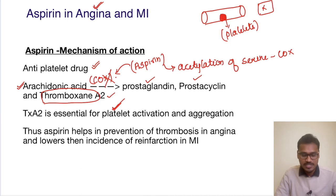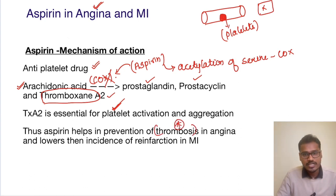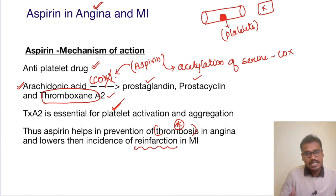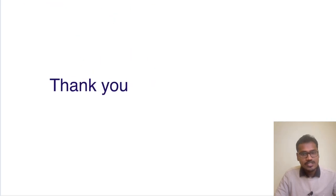This helps in prevention of thrombosis in the case of angina. In myocardial infarction, where a good amount of thrombosis has already formed and tissue is under injury, aspirin helps to prevent re-infarction — that is, the secondary infarct is prevented with the help of aspirin. I hope that's clear. Thank you for listening, we'll see you in the next video.